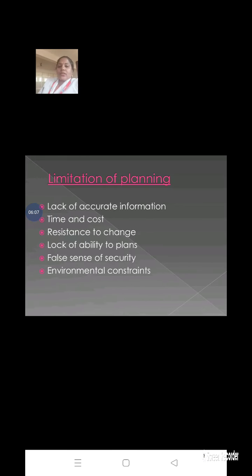Now, what are the limitations of planning? Each and every activity should be pre-planned; however, every activity cannot be pre-planned correctly and we cannot predict the future accurately. So the first limitation is the lack of accurate information about future events. Another limitation is time and cost — every activity that requires proper planning will take time and also incur cost. The second limitation is resistance to change: no one can forecast the future, so if we face any problems, the plan must be changed.